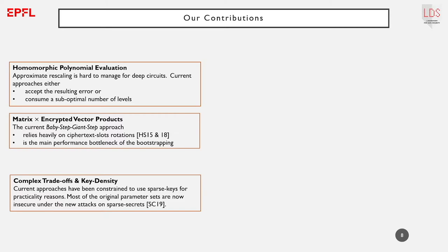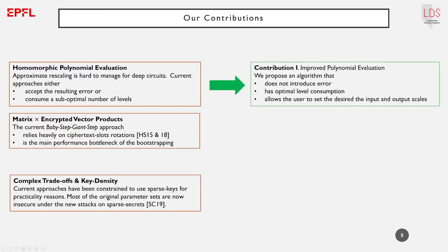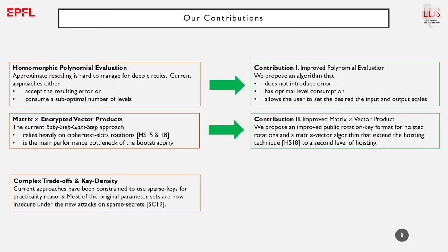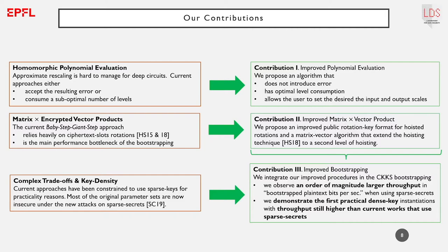This brings us to our contributions. When performing homomorphic polynomial evaluation, rescalings being constrained to factors of q_L introduces small scale deviations between ciphertexts at the same level. We propose an improved polynomial evaluation algorithm that introduces no error while having optimal level consumption. For matrix-vector multiplications, we propose an improved rotation procedure that extends the hoisting technique to a second level of hoisting. Finally, we show that integrating our improved procedures in the bootstrapping circuit greatly improves its efficiency — notably demonstrating an instance using a dense secret key that is more efficient than current works using sparse keys.